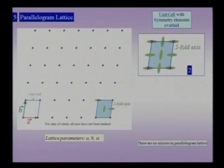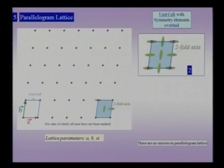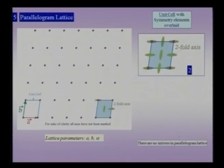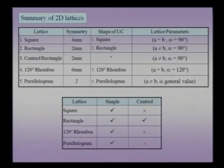The least-symmetry lattice is the parallelogram lattice. When I say least symmetry, I mean it has only 2-folds, exactly like the rectangle lattice, but in terms of parameter expenditure it requires more. There are no constraints on a, b, or alpha — whereas in the rectangle case, alpha was constrained to 90 degrees. This kind of lattice has no mirror planes; the only symmetry is the 2-fold.